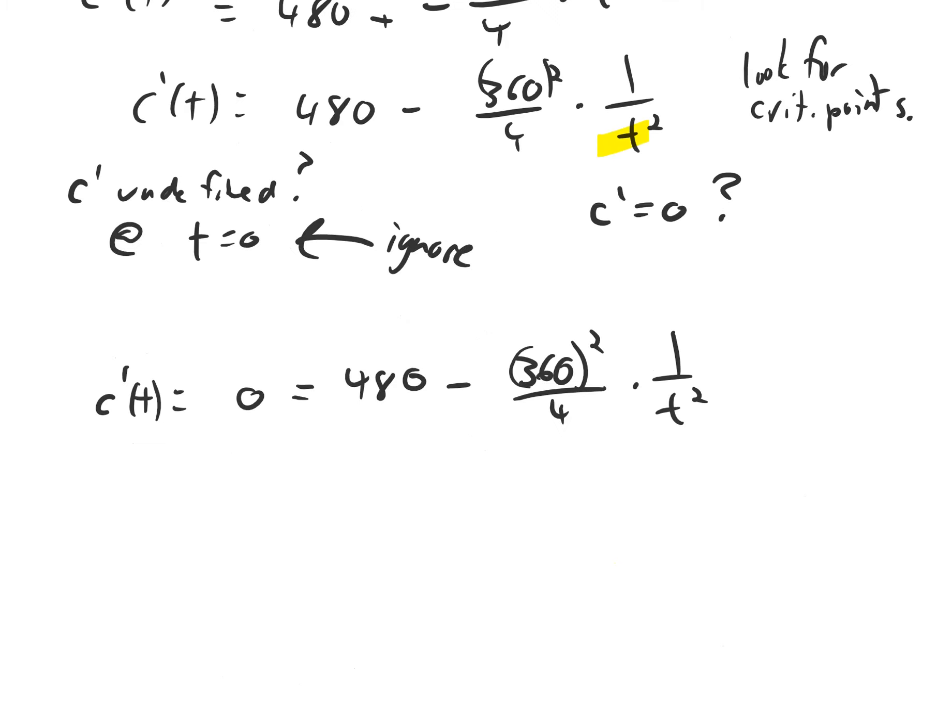The other question we ask is, where is c prime equal to 0? So we set c prime equal to 0, and then we try to solve for t using algebra. First thing, let's move this whole thing to the other side. So then I've got 480 equals 360 squared over 4 times 1 over t squared, by adding this whole thing to both sides.